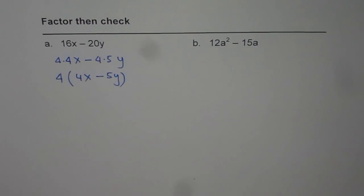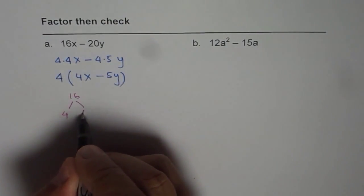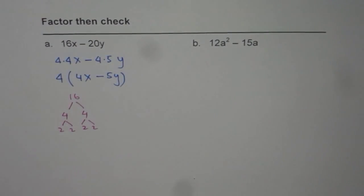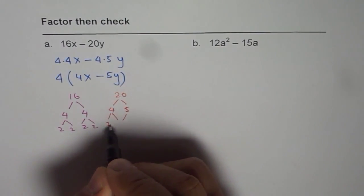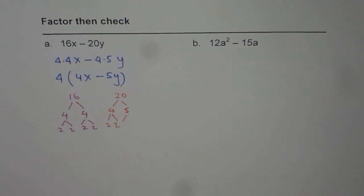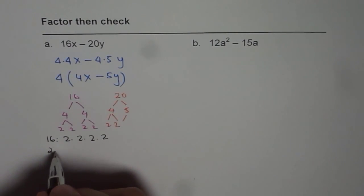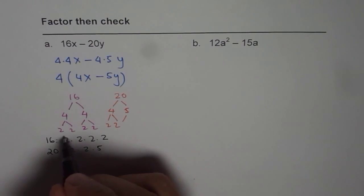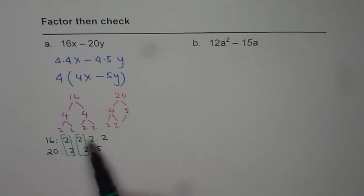As a quick reminder, to find the greatest common factor, we may need to do prime factorization. For 16, we could write this as 4 times 4, which is 2 times 2 times 2 times 2. For 20, we could write this as 4 times 5, and 4 is 2 times 2. So the prime factors for 16 are 2×2×2×2, and for 20 are 2×2×5. The common factors between 16 and 20 are two sets of 2s, which means 4 when you multiply them.